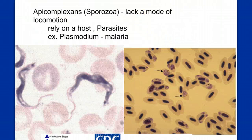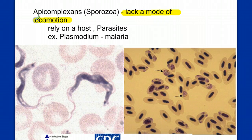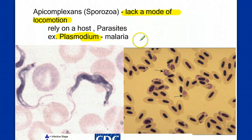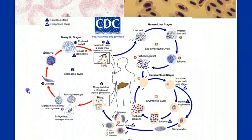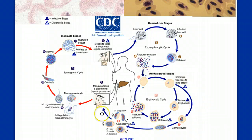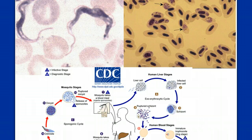Moving to the apicomplexans, or sporozoans — while each of the others had a definitive mode of locomotion, the apicomplexans really rely on a host to move. They're all parasitic. The example we'll use as our poster child is plasmodium, which is the protist that causes malaria. Malaria is a very prominent problem in subtropical areas where mosquitoes transmit the disease. The mosquito vector brings it from one human and eventually passes it to another.